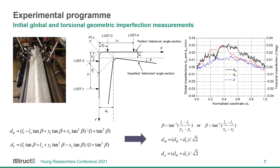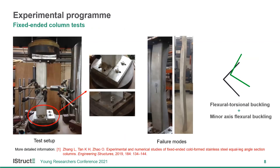Next question from Mithila, another fellow judge, regarding the experimental program. You mentioned pin-pin or fixed boundary conditions. Can you justify how you confirm a joint is pin or fixed? In practice, achieving these perfect conditions is not easy. Have you done any extra work to justify that?